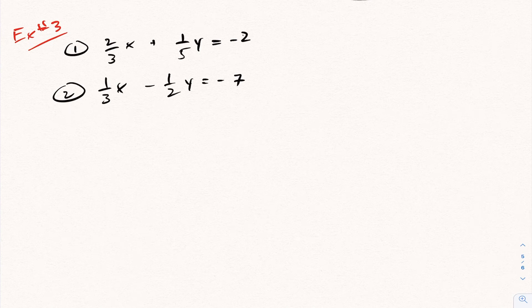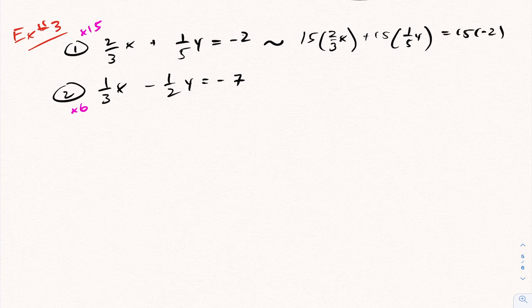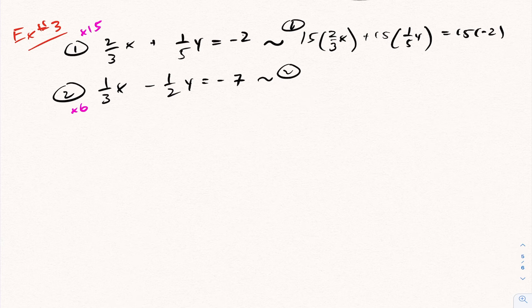For example 3 here, notice you've got all these fractions. So as soon as you see fractions, we should get rid of them. As your first step is to clean this up. I'm going to multiply equation 1 by 15 to get rid of the 5 and 3, multiply equation 2 by 6 to get rid of the 3 and 2. Everything separated by addition or subtraction, you're multiplying across by 15. This one, everything separated by addition or subtraction, you're going to multiply across by 6.